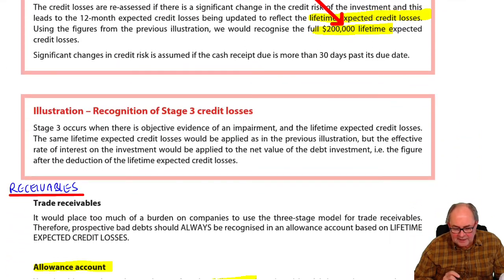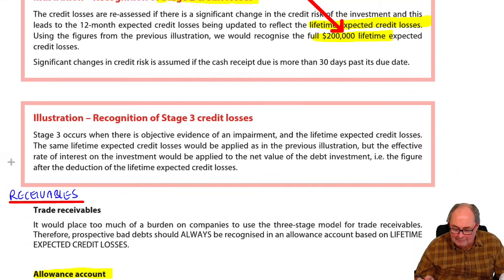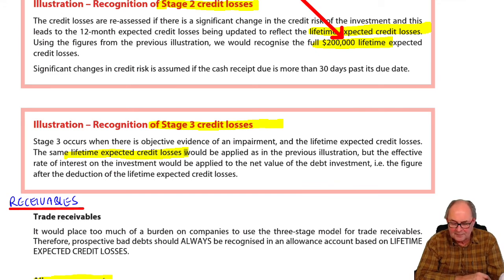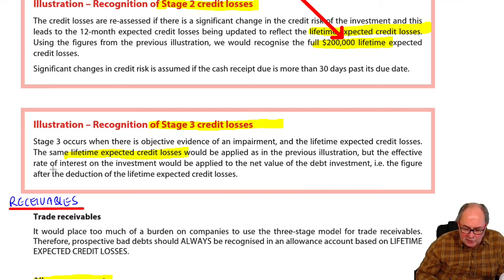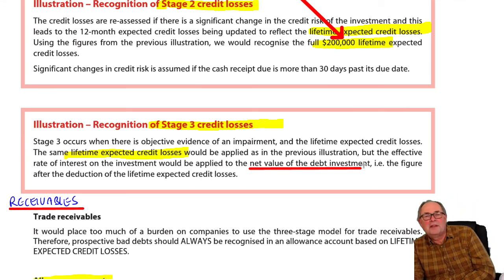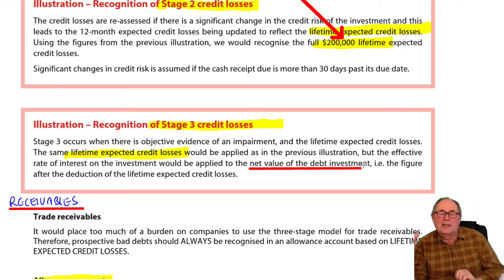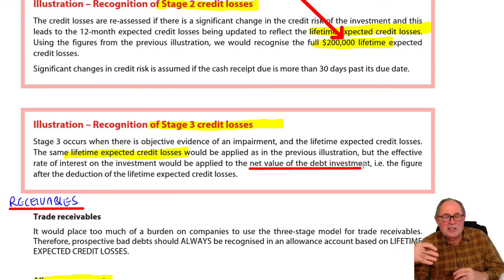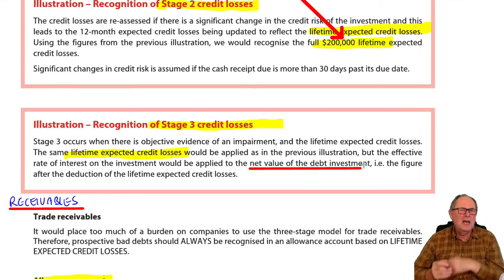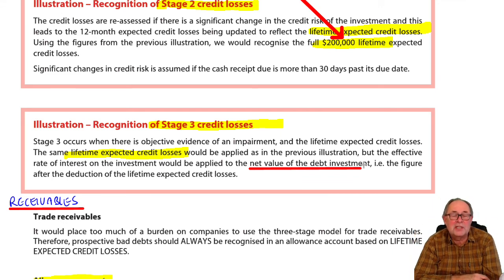At stage three, all that's going to happen is that you're still looking at the same lifetime losses. When they talk about the rate of interest on the net value of the debt investment, the reason it's on the net value is that they will have netted off the two ledger accounts. At that stage, there'll no longer be a debit balance and a credit balance — they'll net the two off, a bit like you did in your first accounting exam when you learned about bad debt accounting.